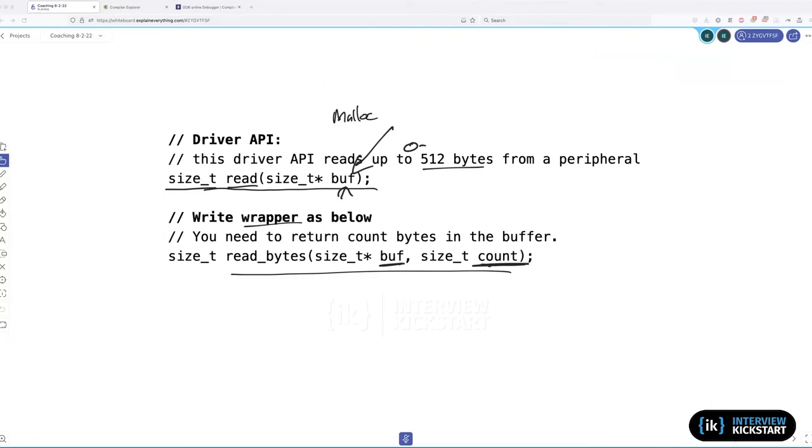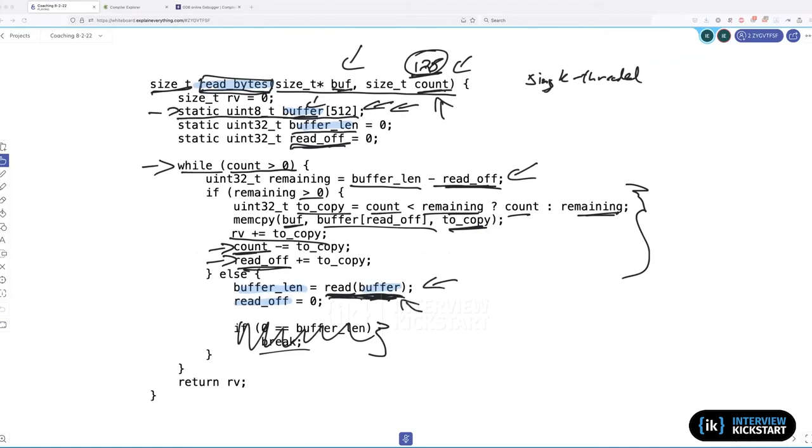I have one question. You mentioned that we need to maintain an internal buffer, right? So any recommendation on the size of that internal buffer? I made the buffer 512 bytes, and I did so for a pretty good reason. This existing read function can return anywhere between zero and 512 bytes, so we already know what the upper limit is. We can make our internal buffer or the static buffer inside this function be exactly that upper limit. Got it.